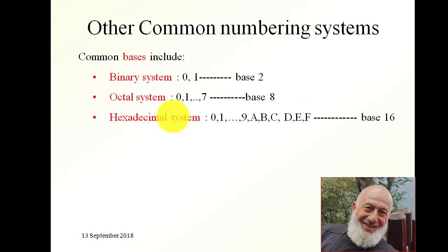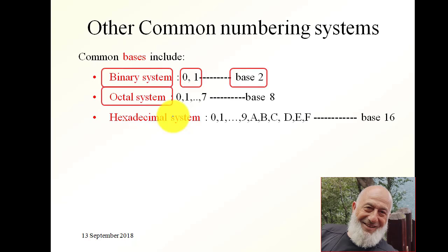Other common numbering systems: we have the binary numbering system, where the digits or symbols are zeros and ones — 0 and 1 only. So we say that the base for this system is 2, or the radix is 2.